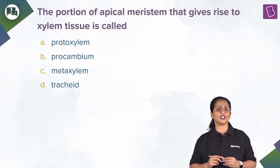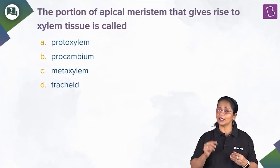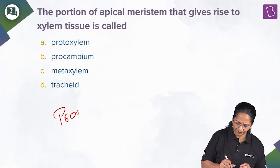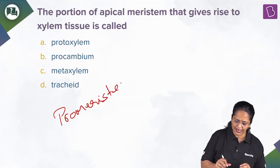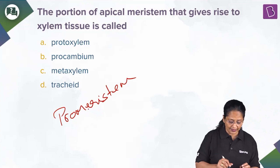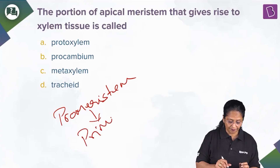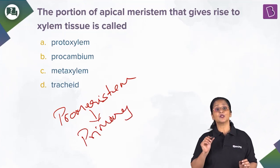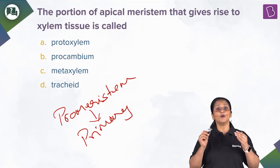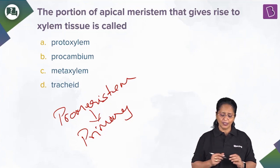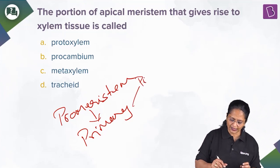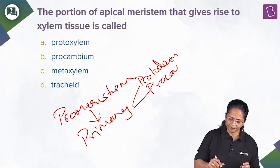Meristematic tissues, based on their origin, are classified as pro-meristem. This pro-meristem is the embryonic meristem and will not last long, so it gives rise to the primary meristem. The primary meristem is responsible for the primary growth of the plant, and based on function it is called the protoderm, the procambium, and the ground meristem.